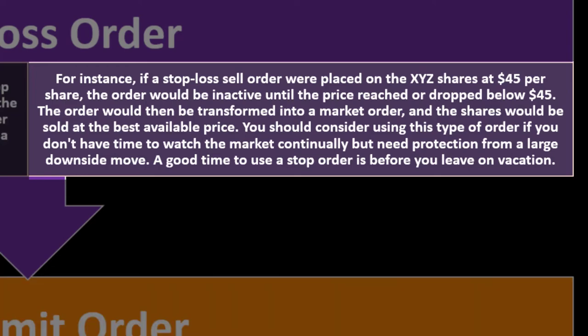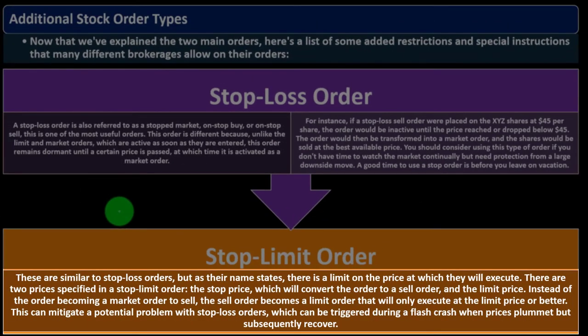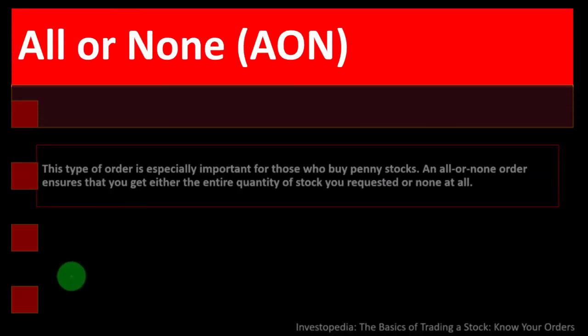You should consider using a stop loss order if you don't have time to watch the market continually but need protection from a large downside move — for example, before leaving on vacation. A stop limit order is similar to a stop loss order, but with a limit on the execution price. Two prices are specified: the stop price, which converts the order to a sell order, and the limit price. The sell order becomes a limit order that will only execute at the limit price or better, which can help during a flash crash.